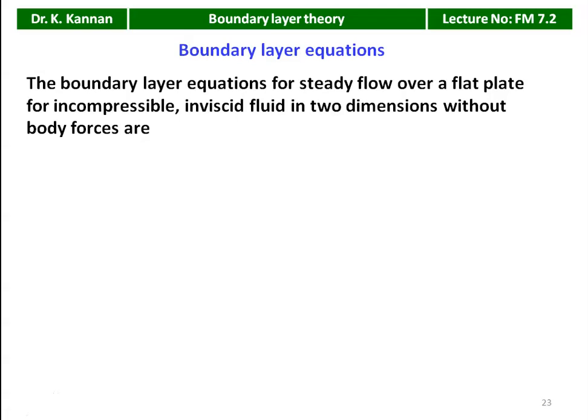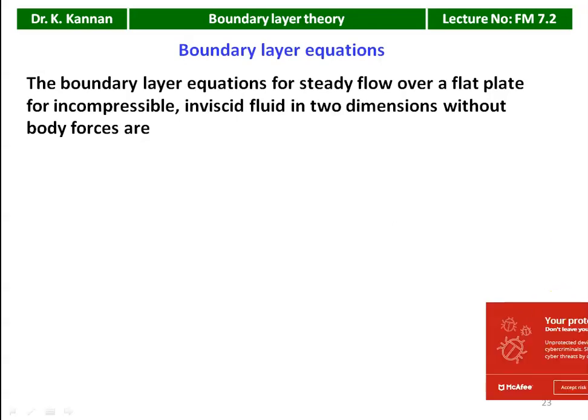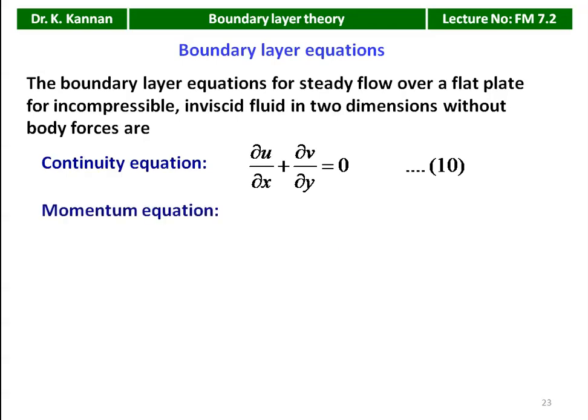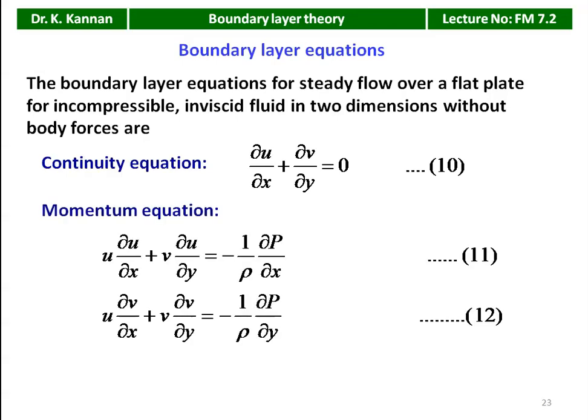The Boundary Layer Equation is written for steady flow over a flat plate for incompressible inviscid fluid in two dimensions without body forces. First, the continuity equation for two-dimensional flow: ∂u/∂x + ∂v/∂y = 0. The x-momentum equation, neglecting body forces (which are due to gravitational acceleration): u·∂u/∂x + v·∂u/∂y = −(1/ρ)·∂p/∂x.